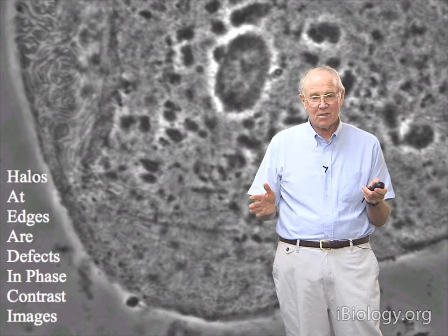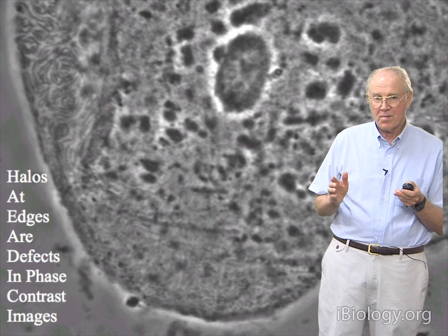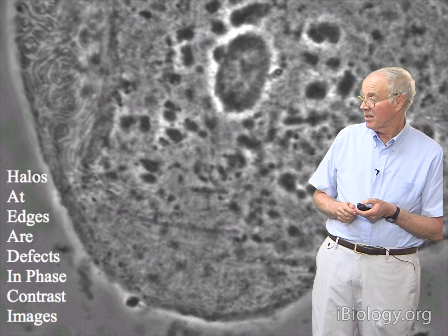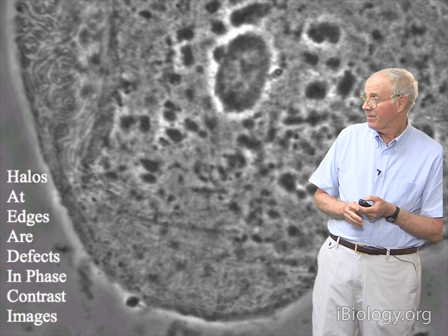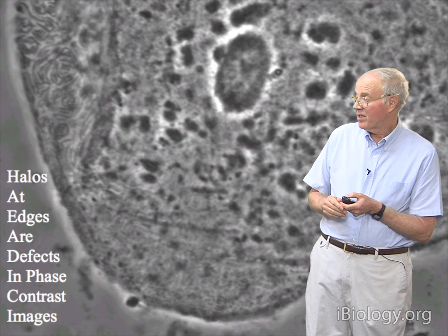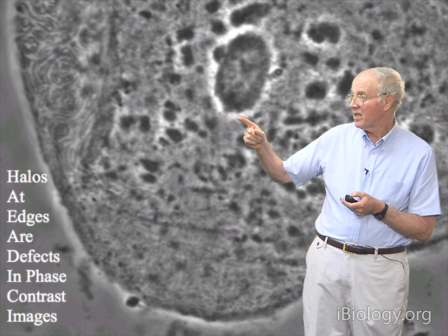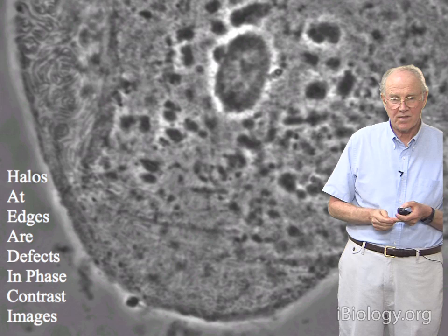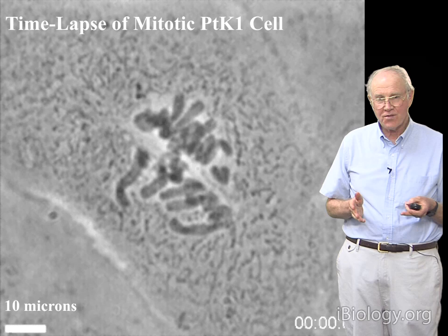Besides not being able to achieve the maximum resolution that the objective numerical aperture will allow, the other problem with phase contrast is that the phase ring is larger than the phase annular illumination. As a result, low-angle diffracted light — which contains information about low spatial frequencies in the specimen — is attenuated by the phase ring and doesn't get to the image plane. This produces halos around phase objects like the nucleus. In thicker specimens, those halos propagate up and down through the specimen and can cause confusion, much like in dark field.